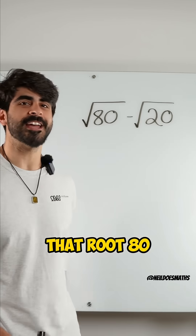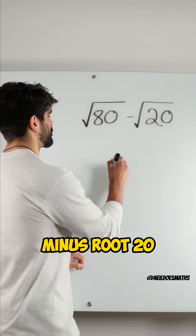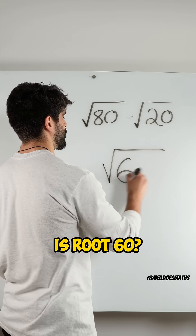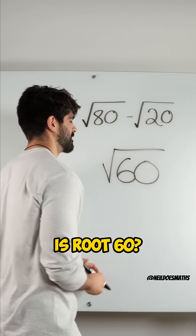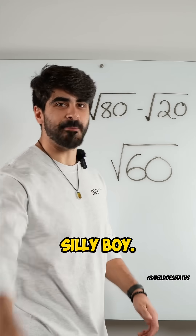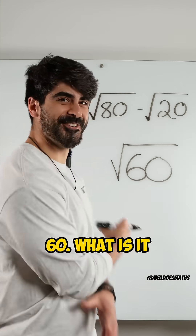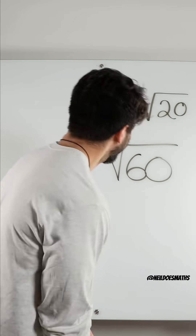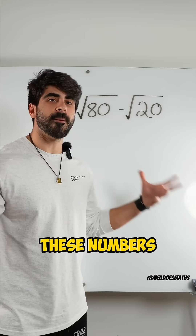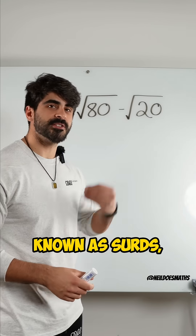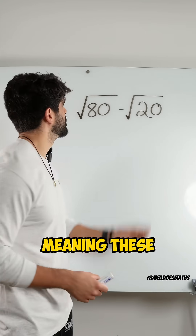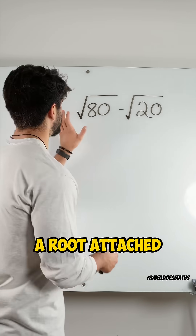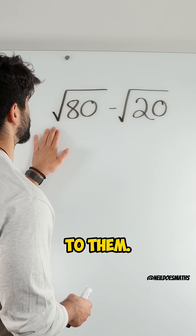Did you think that root 80 minus root 20 is root 60? Silly boy, it's not root 60. These numbers are known as surds, meaning these are not square numbers, but we have a root attached to them.